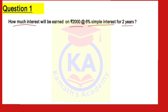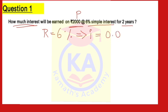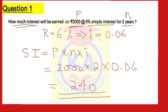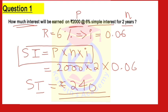First question: How much interest will be earned on 2000 rupees at 6% simple interest for two years? This is one of the easiest problems. What is given: principal P = 2000 rupees, rate R = 6%, so I = 6/100 = 0.06, and N = 2 years. Using SI = P × N × I: SI = 2000 × 2 × 0.06 = 240 rupees. The answer is 240 rupees.